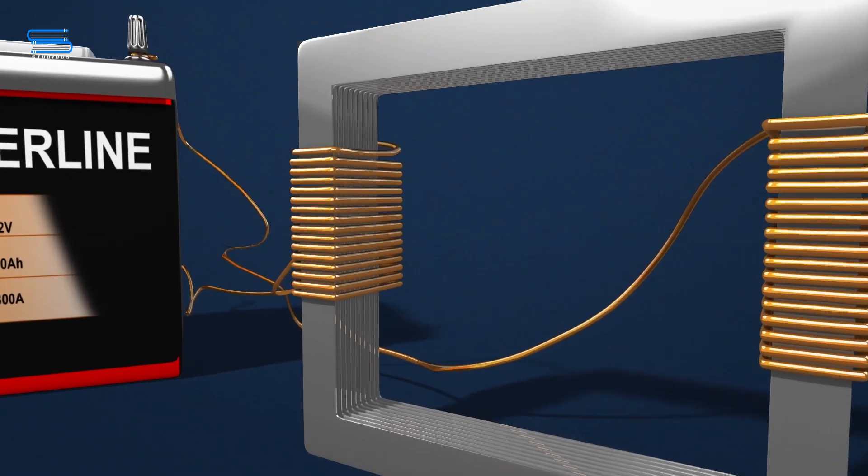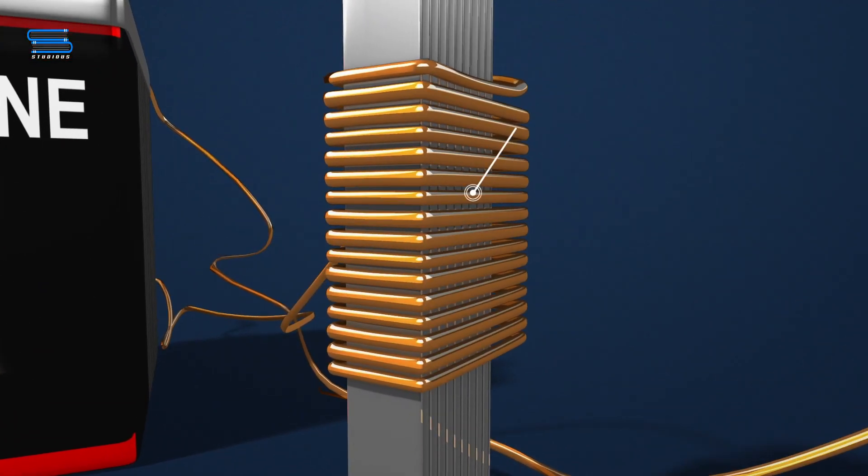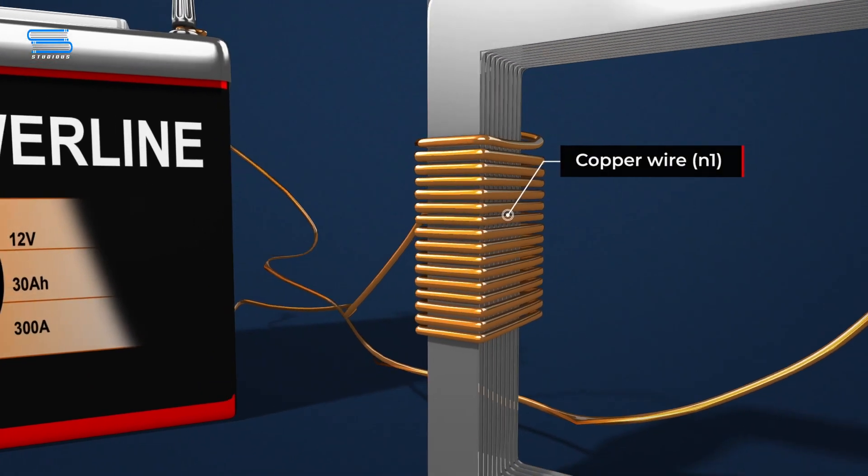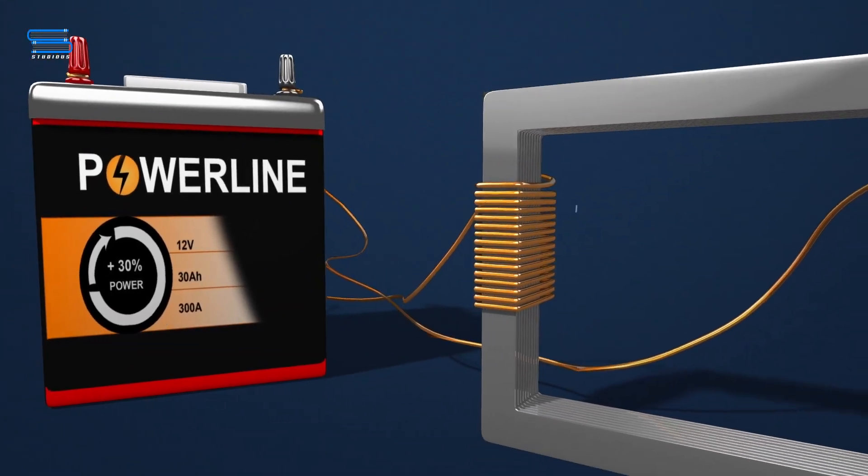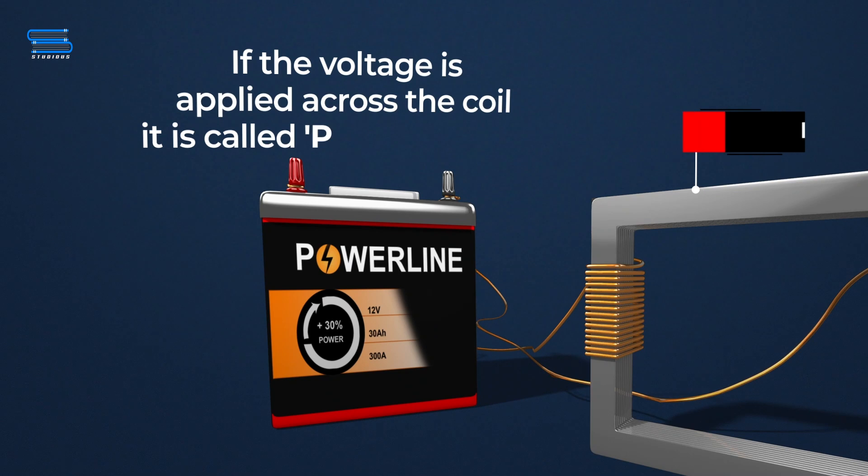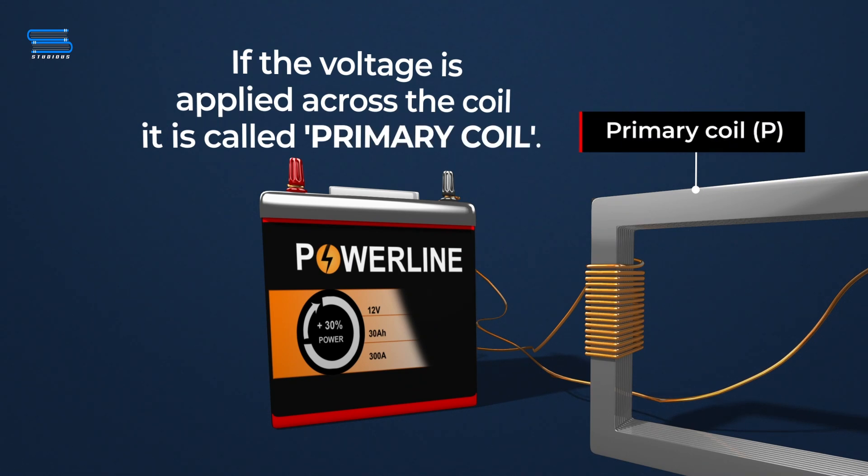On one side of the rectangular core, an insulated copper wire is wound to make a coil of turns N1. If voltage is applied across this coil, it is called a primary coil, P.